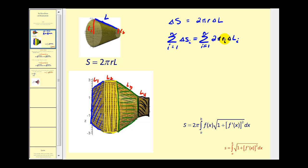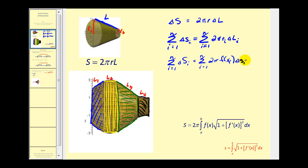Now let's consider r sub i, which is the average of the two radii of the frustum. Due to the intermediate value theorem, there is some function value in the interval equal to that average radius, so we replace r sub i with f of x sub i. And delta l sub i is the same as delta s sub i — the change in arc length.